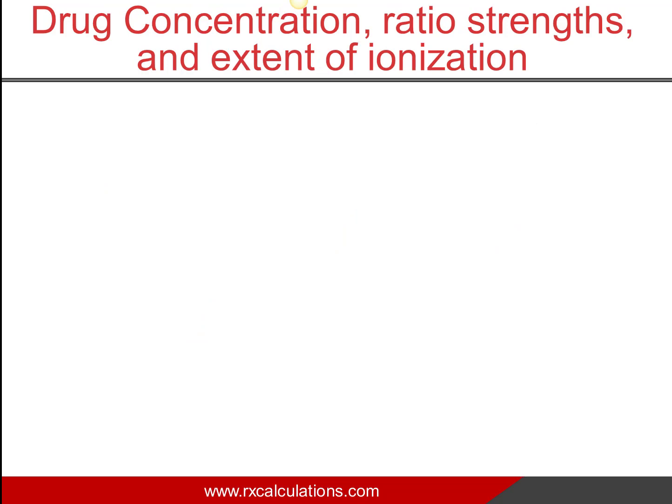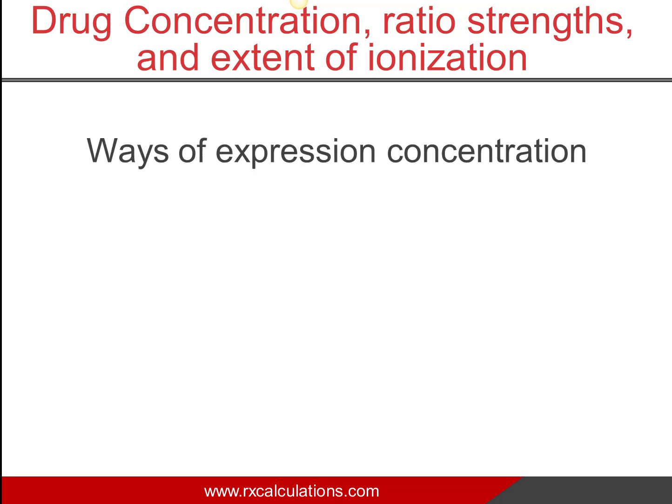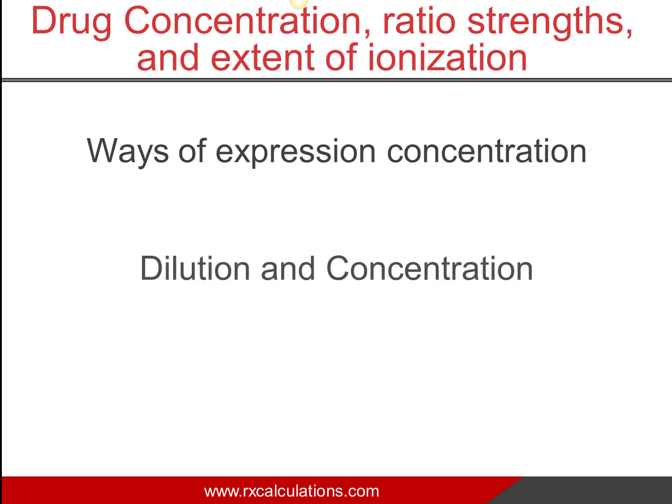The next section talks about drug concentration, ratio strengths, and extent of ionization. The first thing you want to do is identify what goes under this topic. The various ways you express concentration fall here: ratio strength, percentage strength, PPM, parts per billion, dilution and concentration. Allegation falls under this section — using the algebraic method to alter product strength, stock and solution calculations. Basically, any kind of scenario where you reduce the strength or increase the concentration falls under this particular topic.